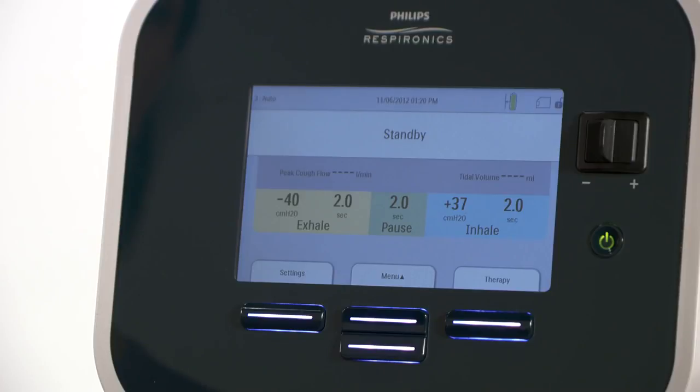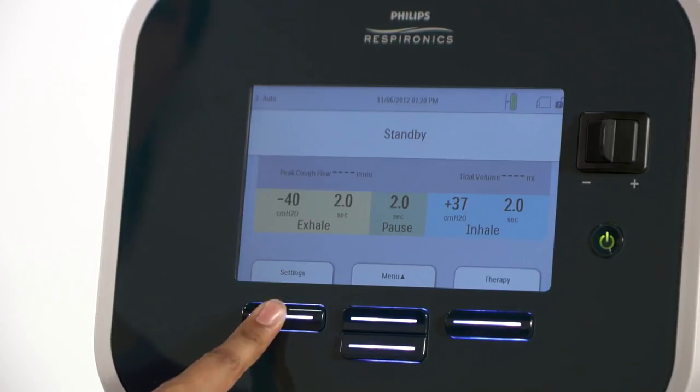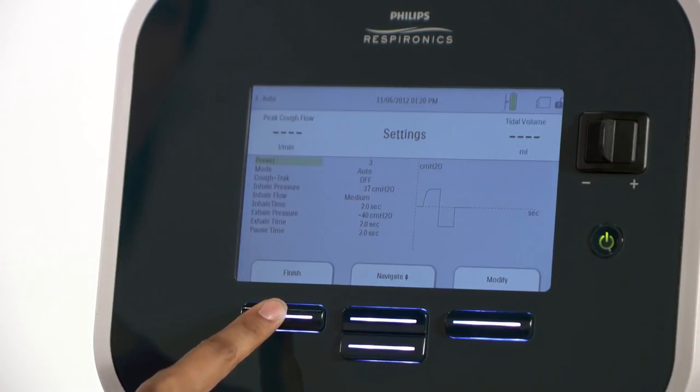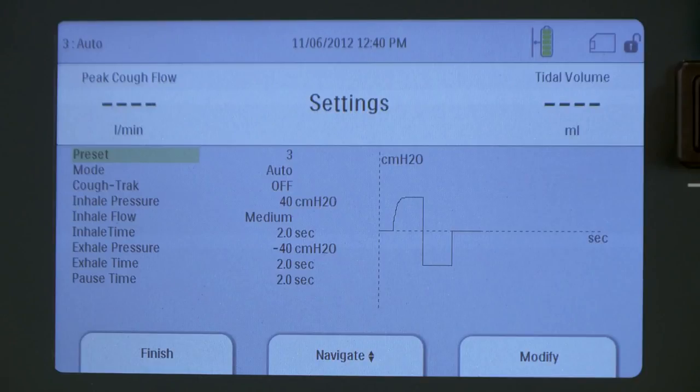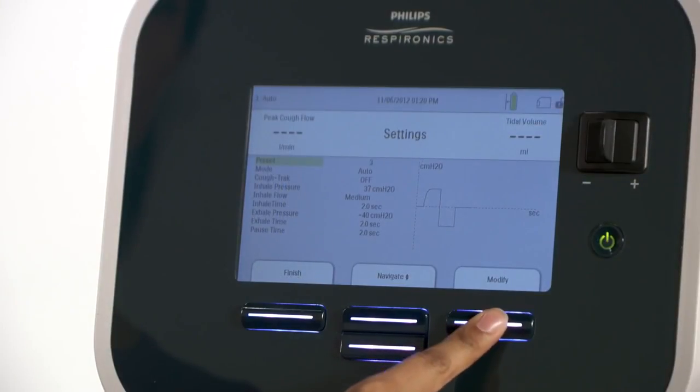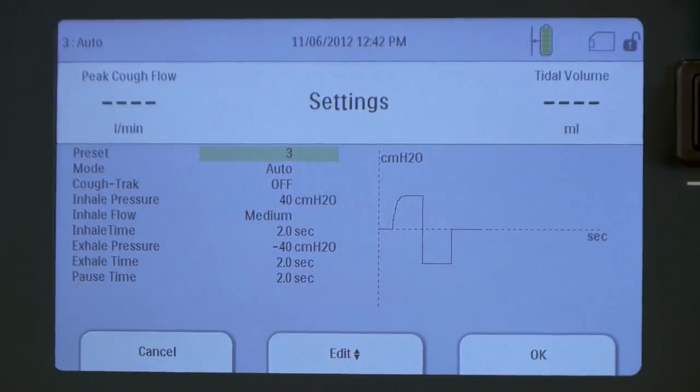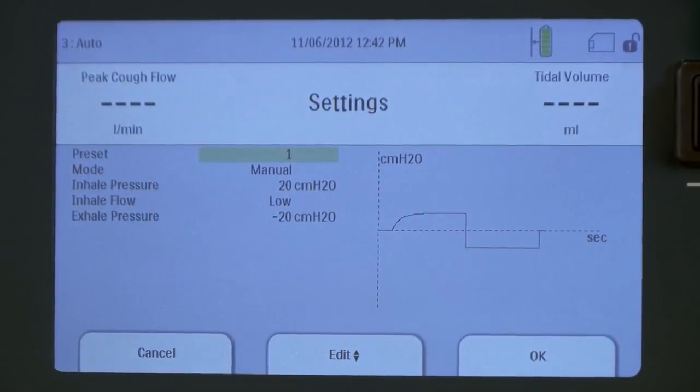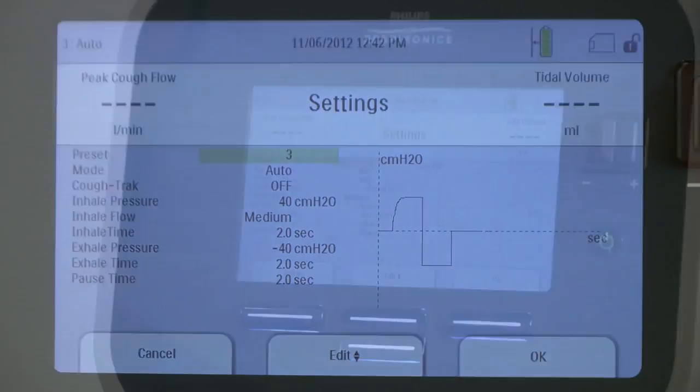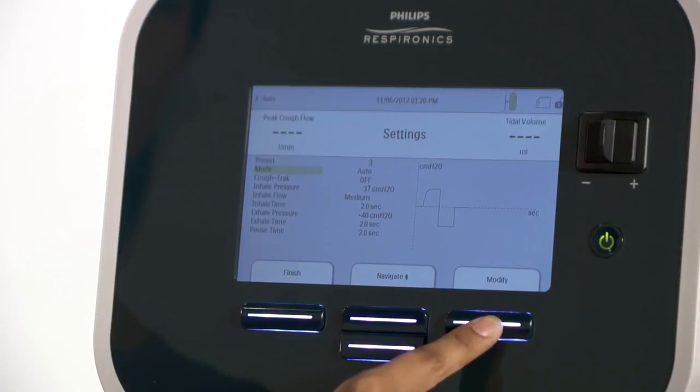To enter prescribed settings, press the left button under settings. A setting menu will appear. The first item on the list will be highlighted, in this case, preset. Press the modify button. You can select which one of the three presets you wish to modify. Press the OK button to confirm the preset.